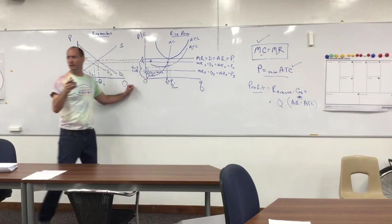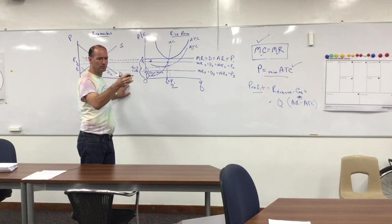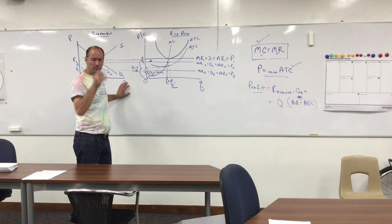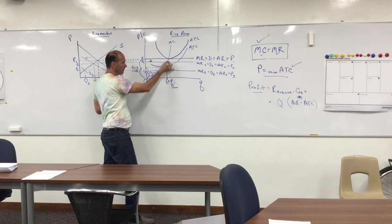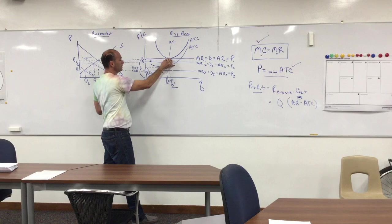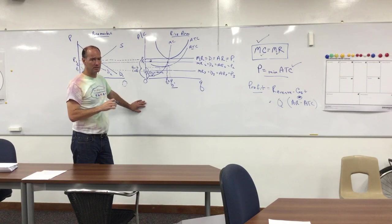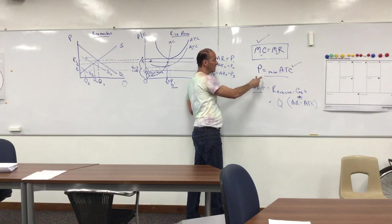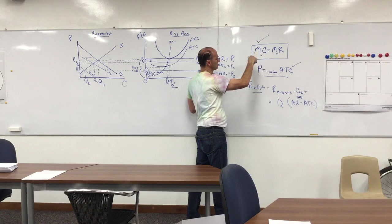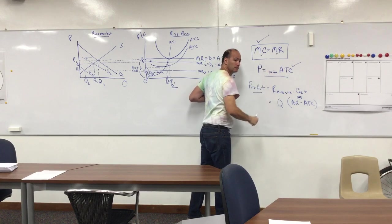The second question is allocative efficiency. Allocative efficiency is defined as: at the last unit produced, the marginal cost of that unit equals the marginal benefit (marginal revenue). At Q1, marginal cost equals marginal revenue — so we have an allocatively efficient outcome. In long-run equilibrium, perfect competition is both productively efficient — because price equals minimum ATC — and allocatively efficient — because marginal cost equals marginal revenue, which equals marginal benefit.